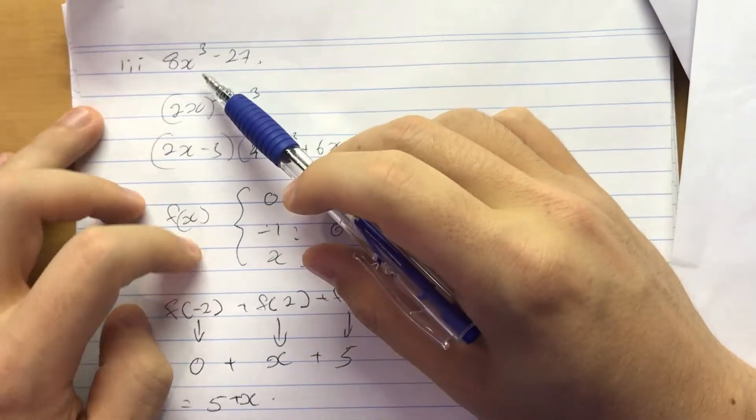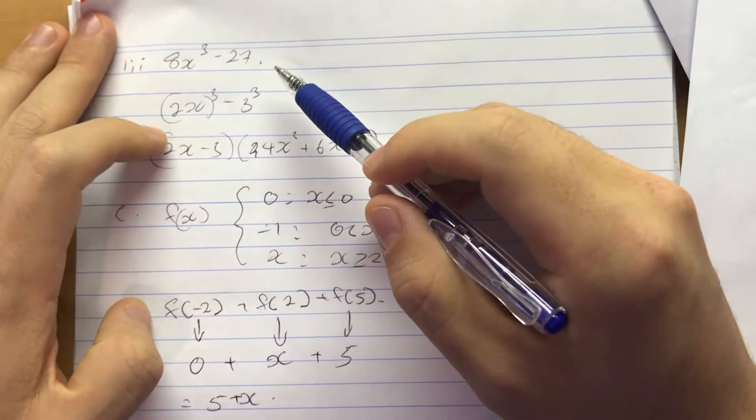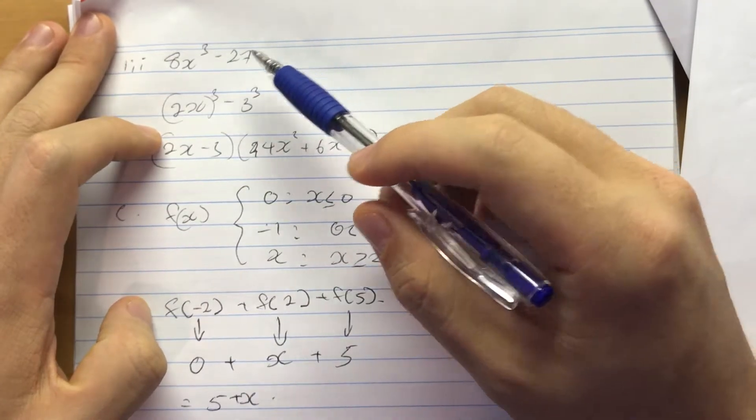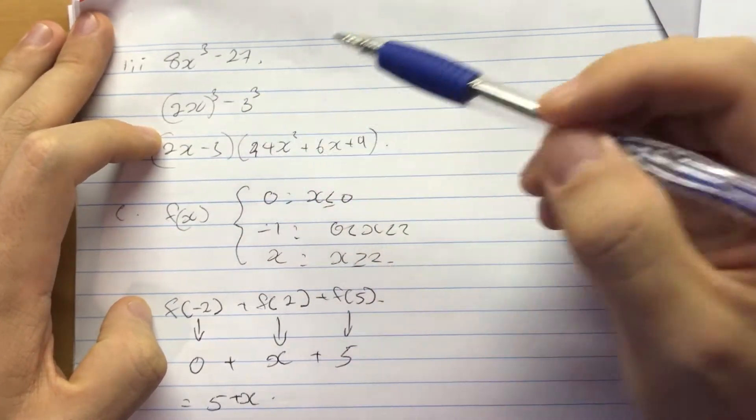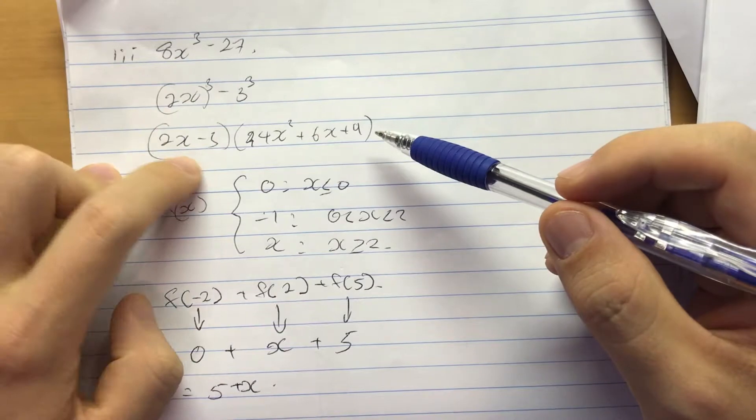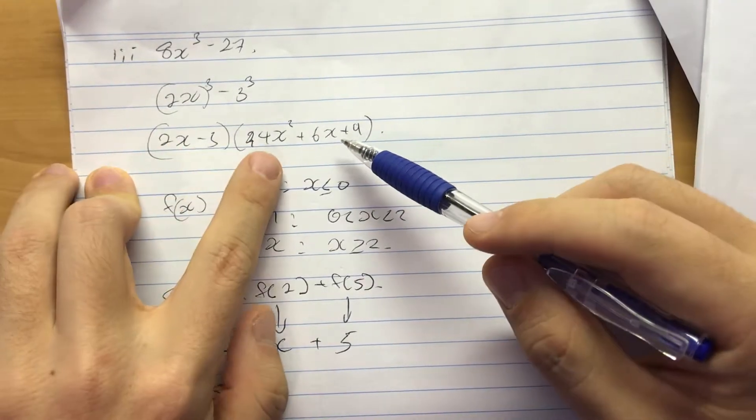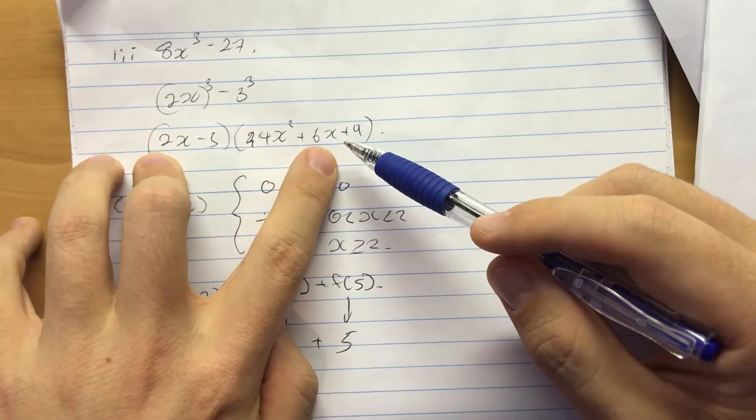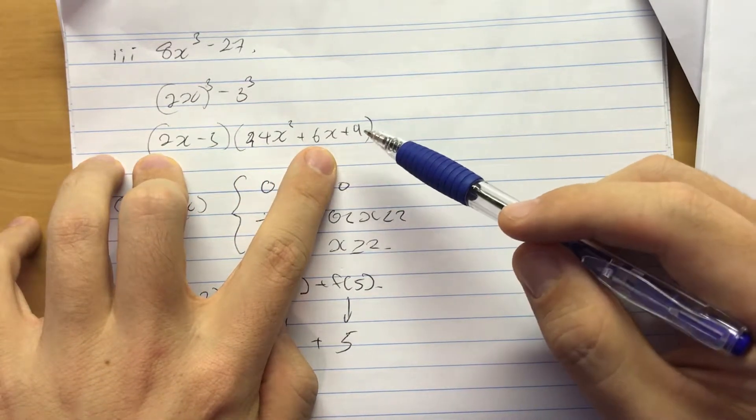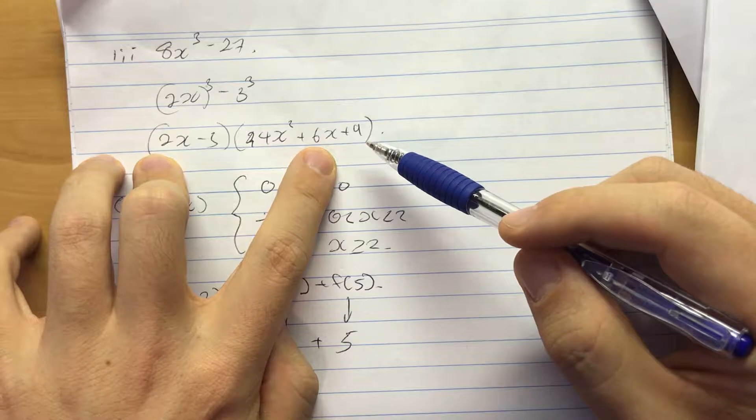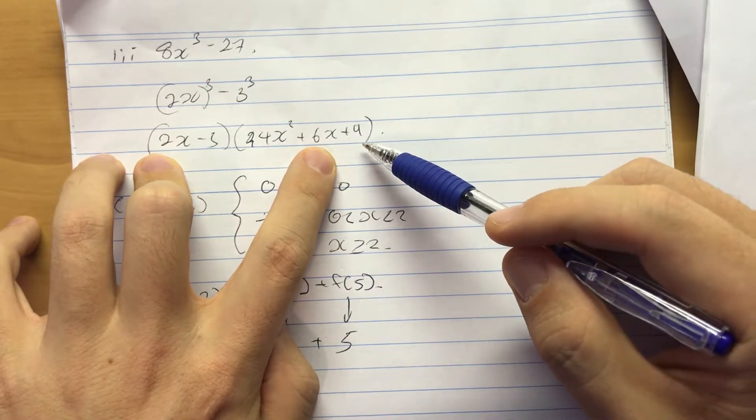I'm going to try to factorize this. You can see the difference of two cubes. Okay. That's (2x)³ - 3³. So factorize it like this: (2x-3)(4x² + 6x + 9).